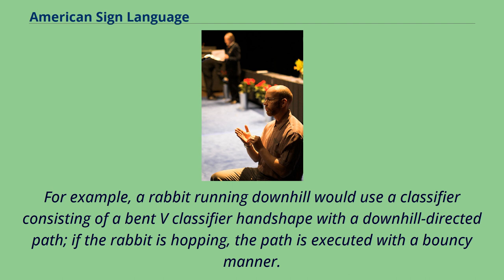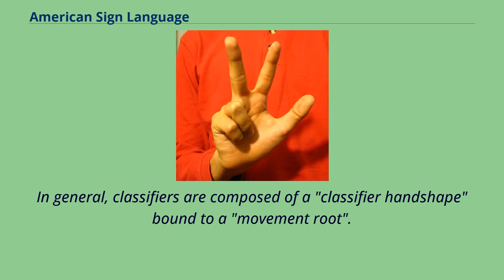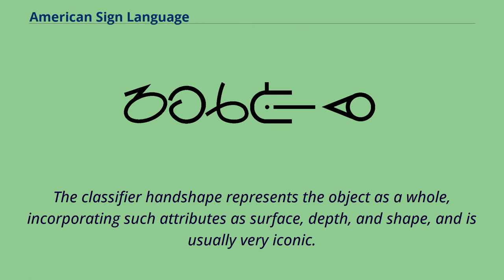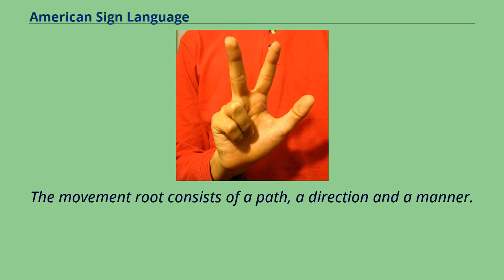If the rabbit is hopping, the path is executed with a bouncy manner. In general, classifiers are composed of a classifier handshape bound to a movement root. The classifier handshape represents the object as a whole, incorporating such attributes as surface, depth, and shape, and is usually very iconic. The movement root consists of a path, a direction, and a manner.